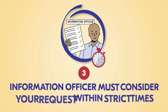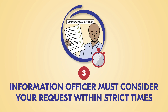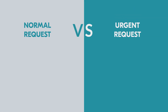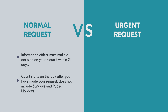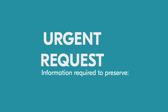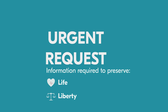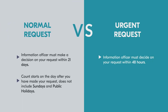Step three: the information officer must consider your request within strict time frames. If it's a normal request, the information officer must make a decision within 21 days. The count starts on the day after you've made your request and does not include Sundays and public holidays. If it's an urgent request involving information necessary to safeguard a person's life or liberty, the information officer must decide within 48 hours, counting from the time the request was received.